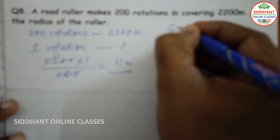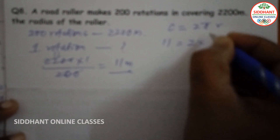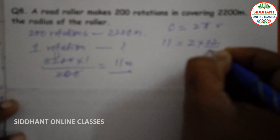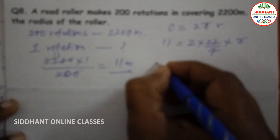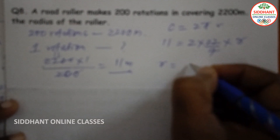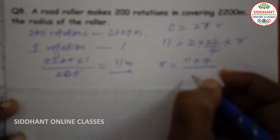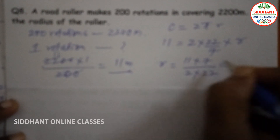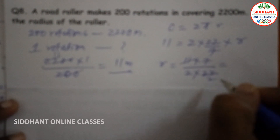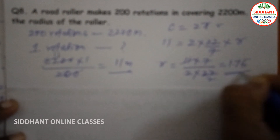We know circumference equals 2 pi r, so 11 equals 2 into 22/7 into r. Then r equals 11 into 7 by 2 into 22. After cancellation we get radius equals 1.75 meters.